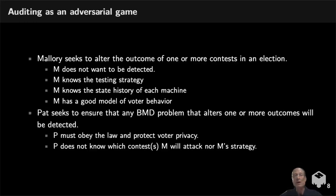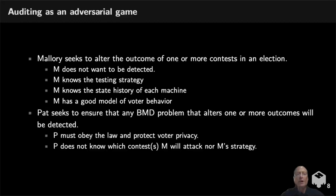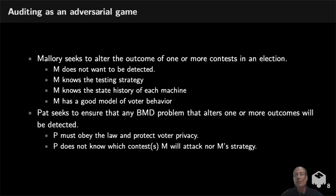I'm going to frame this as a two-person adversarial game. The evildoer is Mallory, who's trying to alter the outcome of one or more contests without being detected. Mallory knows how the ballot marking devices will be tested, knows the state history of the machine, knows what votes have been cast, and has a good model of voter behavior from spyware installed on voting machines in previous elections. In contrast, Pat is our tester, trying to detect any ballot marking device problem that alters outcomes. But Pat has to obey the law, protect voter privacy, and doesn't know which contests Mallory will attack or what strategy Mallory will use. This is a very asymmetric problem.